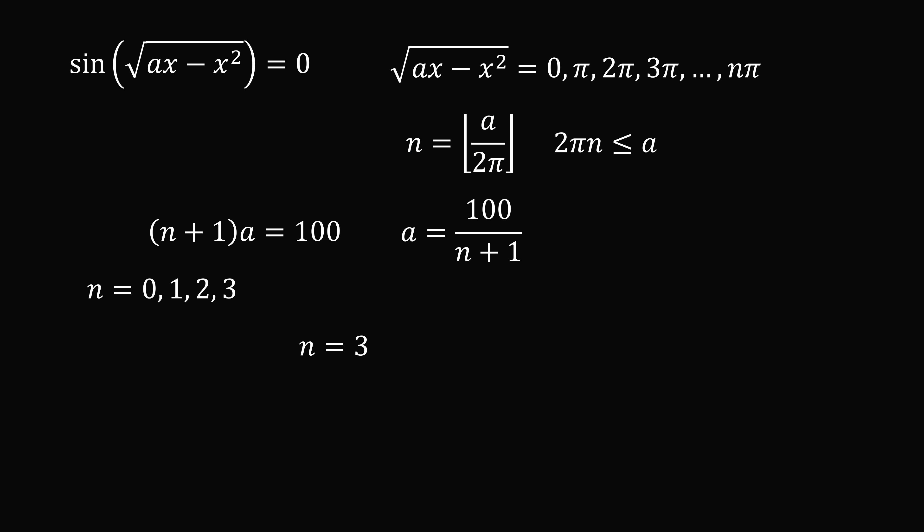We can check the final case that n is equal to 3. We get a is equal to 25. And n is in fact equal to the floor of a divided by 2 pi, which is equal to 3. So this case works.